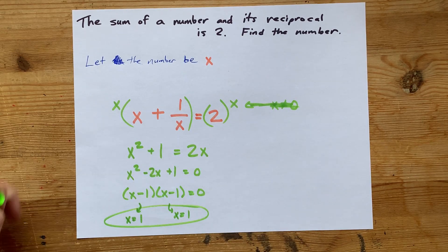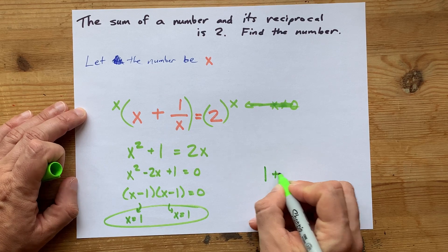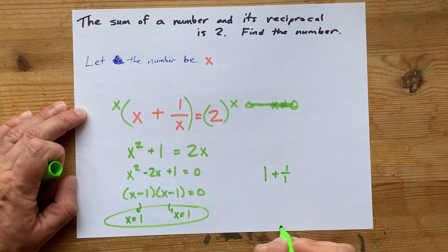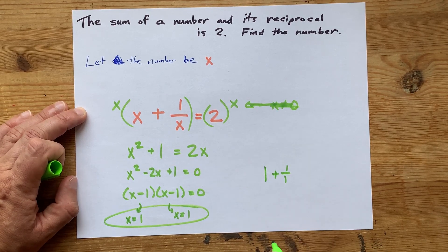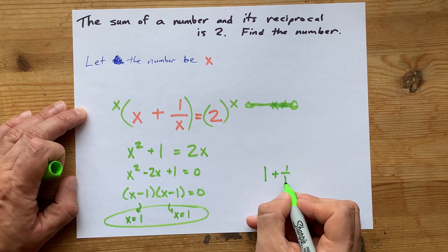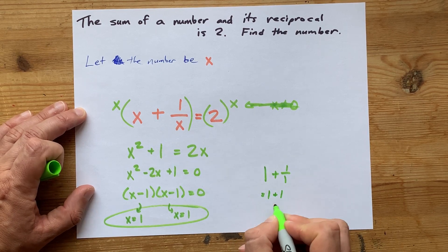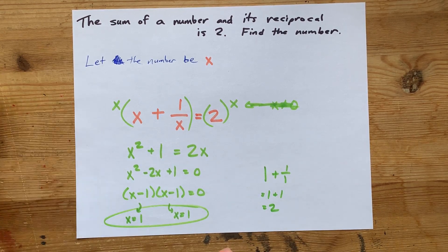That makes sense, right? A number and its reciprocal. 1 is its own reciprocal, like 1 divided by 1 is 1, and you happen to get 2 out of that.